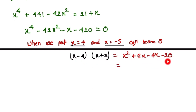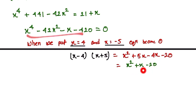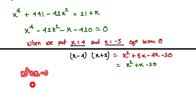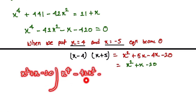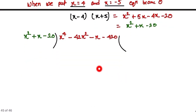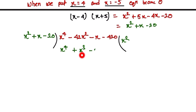Now we divide x to the power 4 minus 42x squared minus x minus 420 by x squared plus x minus 20 using polynomial long division. First, we multiply by x squared, which gives x to the power 4 plus x cubed minus 20x squared.